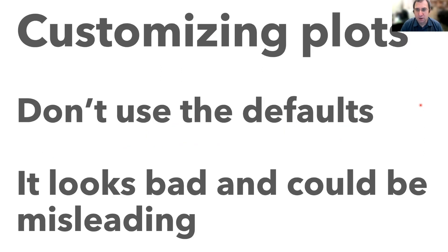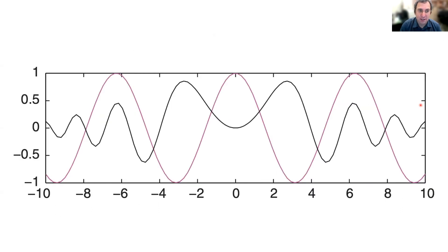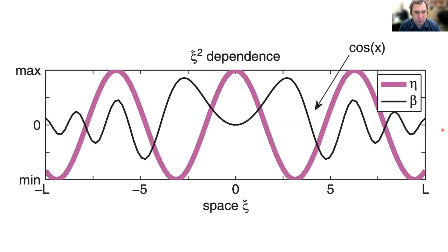Let me give some more tips on customizing plots. In general, you should not use the defaults — it looks bad and could be misleading. If you plot something in MATLAB, you'll get a plot that looks like a basic default. It would be much better to change things: put the min and max along the y-axis, label the curves, fill some of them in, make some wider than others, and add a legend. If you just turn in the default it isn't exactly clear what's being described. With customization, at least we have context — there's something called chi and we're plotting it with a chi-squared dependence. You really want to customize things, especially when giving presentations.